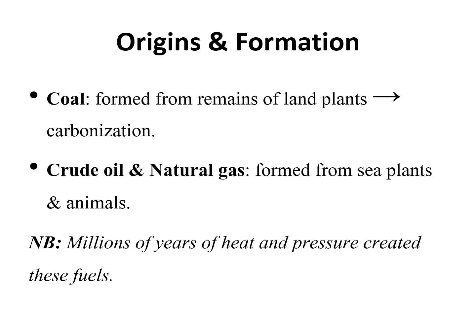What are some of the origins? How do they come about and how are they formed? Number one, coal is formed from remains of land plants through the process we call carbonization. While crude oil and natural gas are formed from sea plants and animals. A million years of heat and pressure created these fuels. That is how they are formed in brief — it gives us a clear picture of how they are formed.